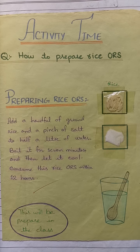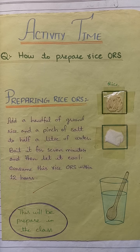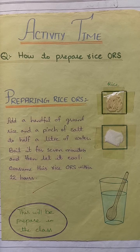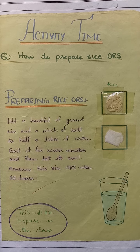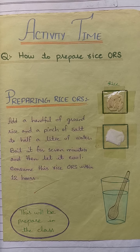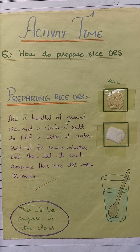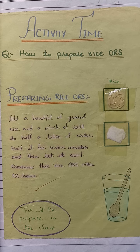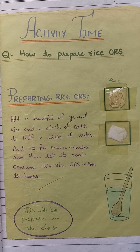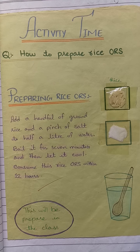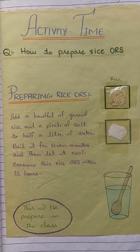Next, how to prepare rice ORS. First of all, you should know what ORS is. ORS is a liquid used for dehydration — when the body is dehydrated, the doctor suggests using ORS. ORS is a liquid that helps our body, and when we have loose motion, we also use ORS for dehydration.